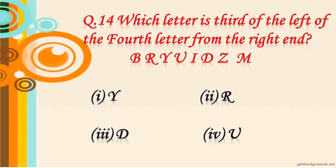Question number 14: which letter is third to the left of the fourth letter from the right end? The sequence is B, R, Y, U, I, D, Z, M. The fourth letter from the right end is I. The third letter to the left of I is R. So the answer is R.